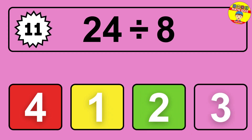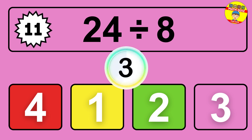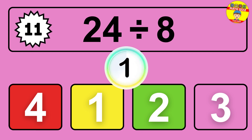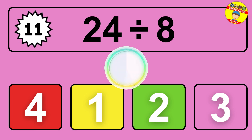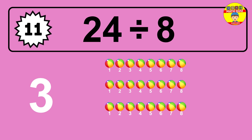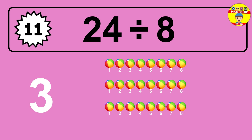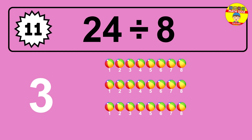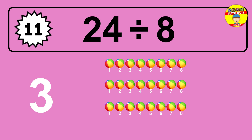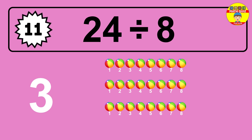24 divided by 8 is time to think. Let's go to the solution. Divide the number 24 by 8. Each group contains 8 units, so dividing 24 by 8 results in 3 equal groups. Thus the result is 24 divided by 8 equals 3.